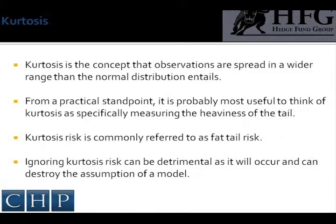Kurtosis is the concept that observations are spread in a wider range than the normal distribution entails. Fewer observations cluster near the average, and more observations populate the extremes — either far above or far below the average — compared to the bell shape of the normal distribution. Kurtosis is a measure of the shape of the probability distribution, closely related to the mean variance. Kurtosis measures both the peak of the distribution and the depth of the tails.